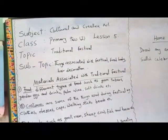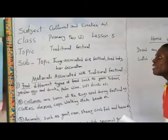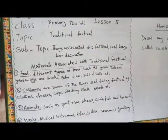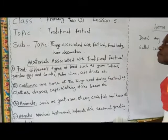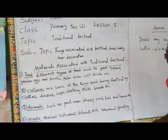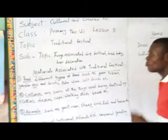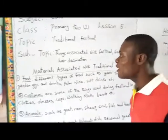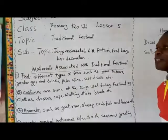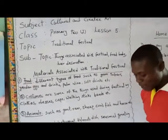Examples are food, body decoration, and hair decoration. Those are some of the things associated with festival. Now, before we look at materials associated with traditional festival — what is a festival? A festival is a celebration that is marked, maybe once in a year.